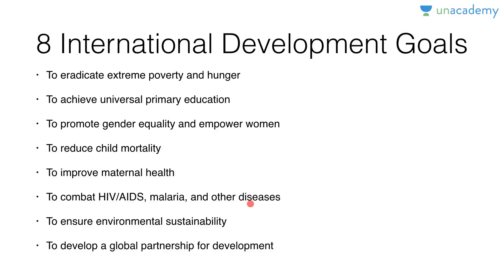Six means sticks — to combat HIV/AIDS, malaria, and other diseases. All these diseases have left people crippled, so now they have to walk using sticks. Seven is heaven — only in a beautiful environment like heaven is everything green, organic, and running on renewable energies like solar energy. Seven means heaven, heaven means environmental sustainability. Eight is gate — to develop a global partnership for development. Earlier all nations used to close the gate on each other, but now they have opened it and started to develop cooperation.